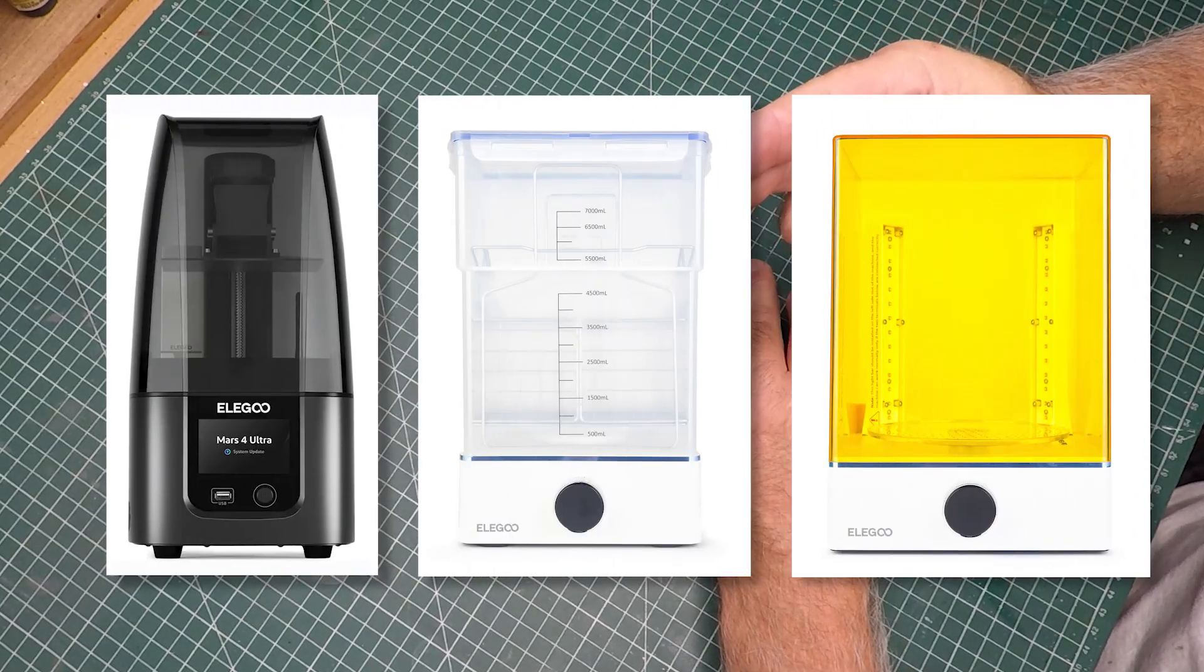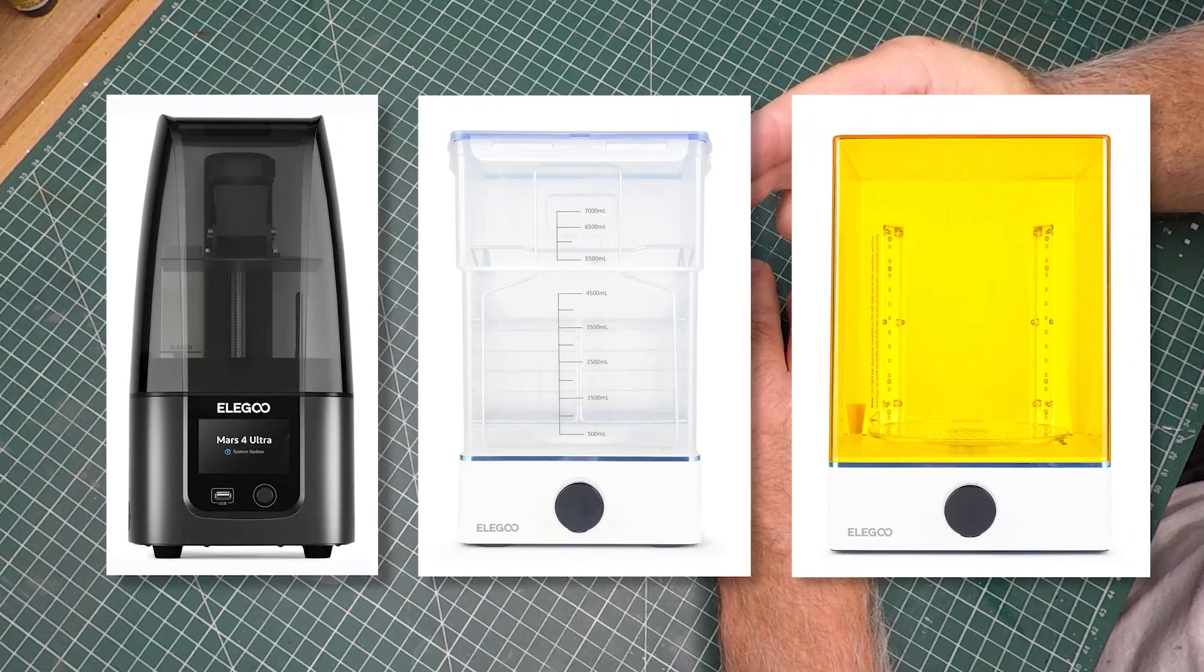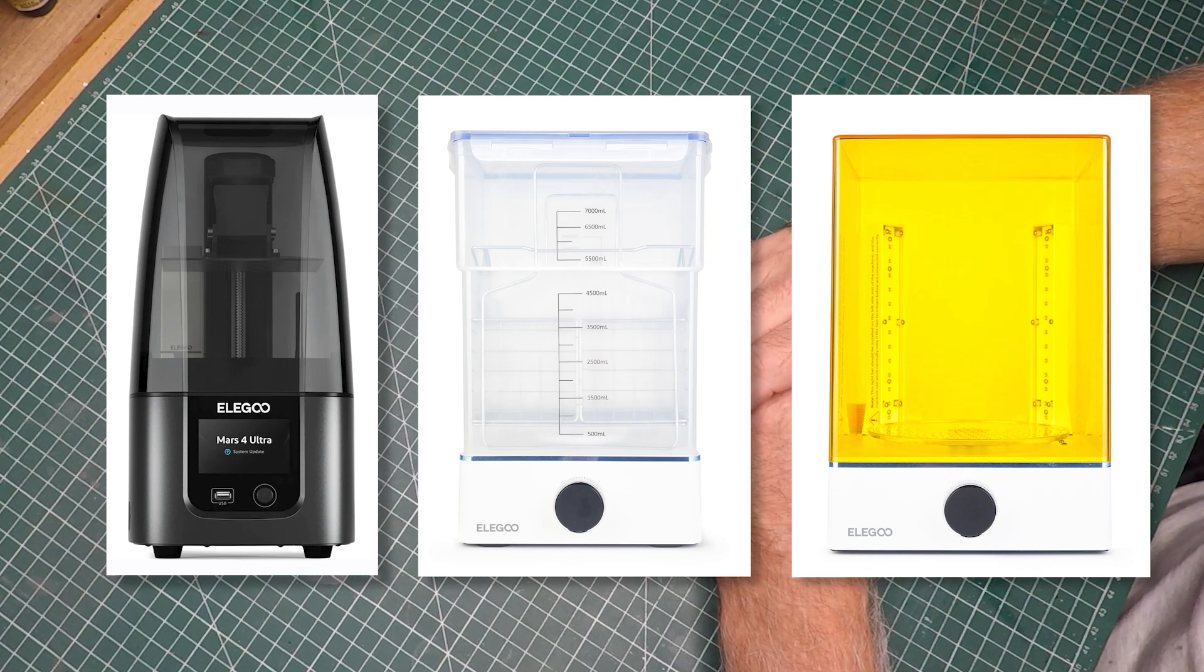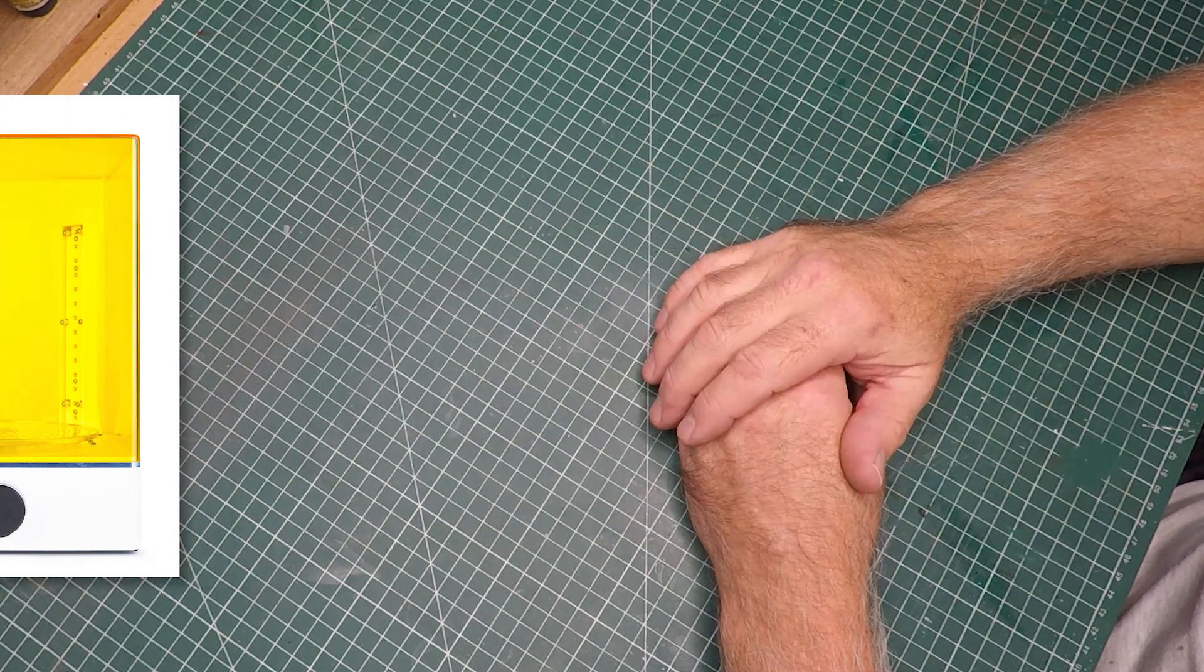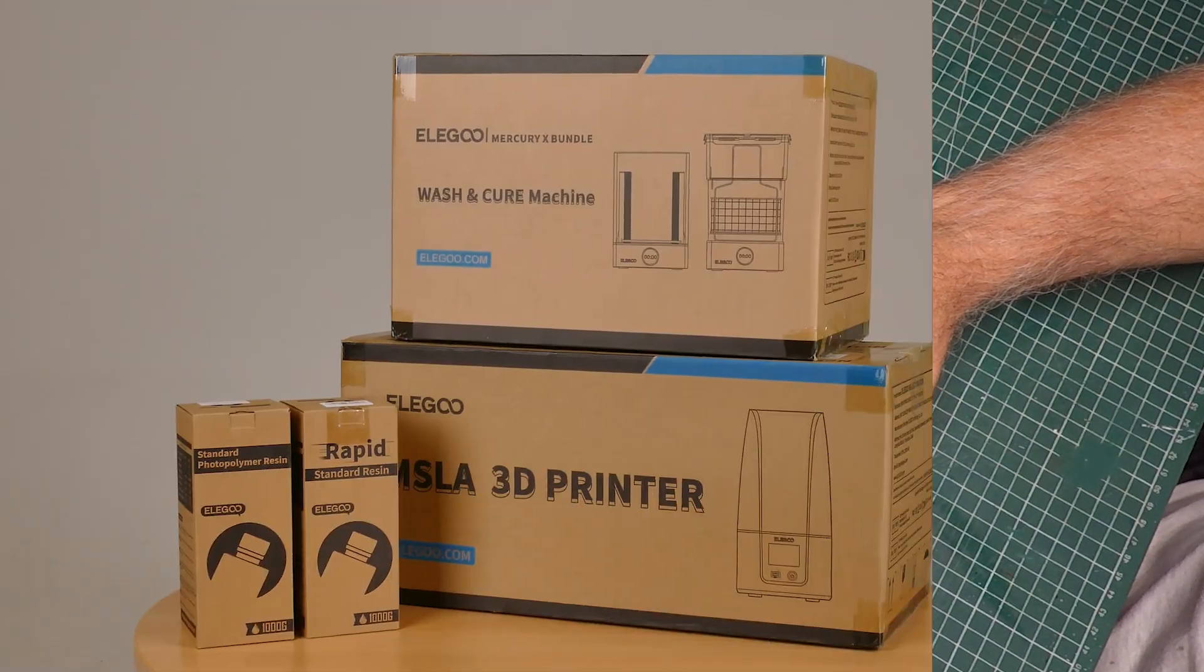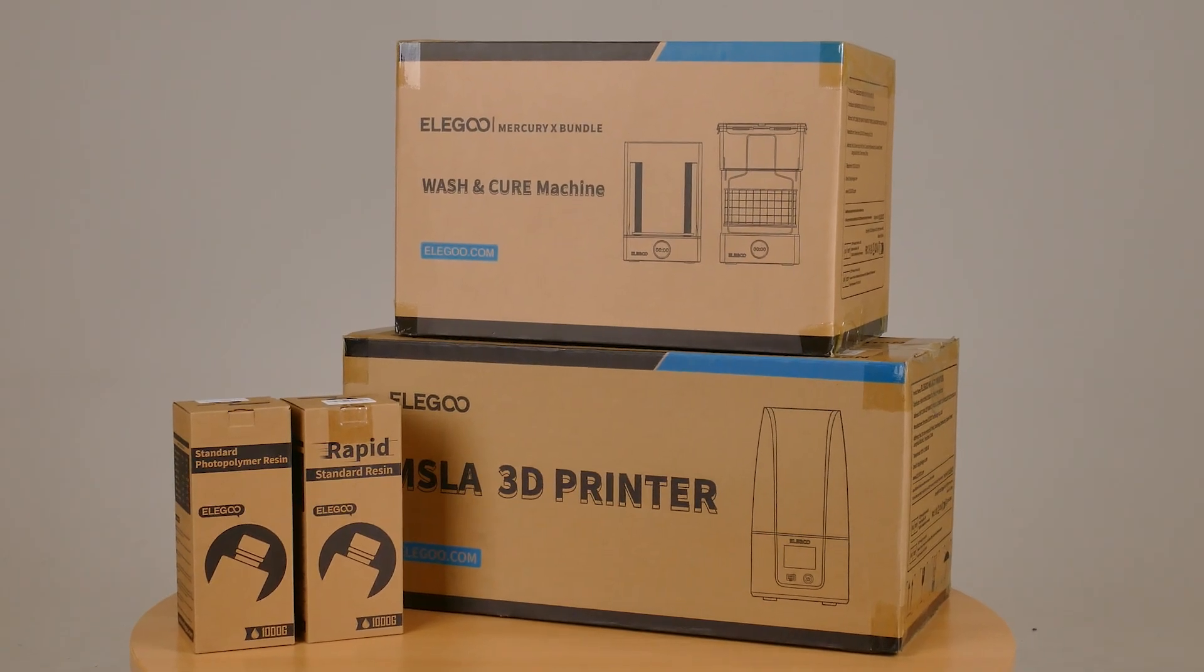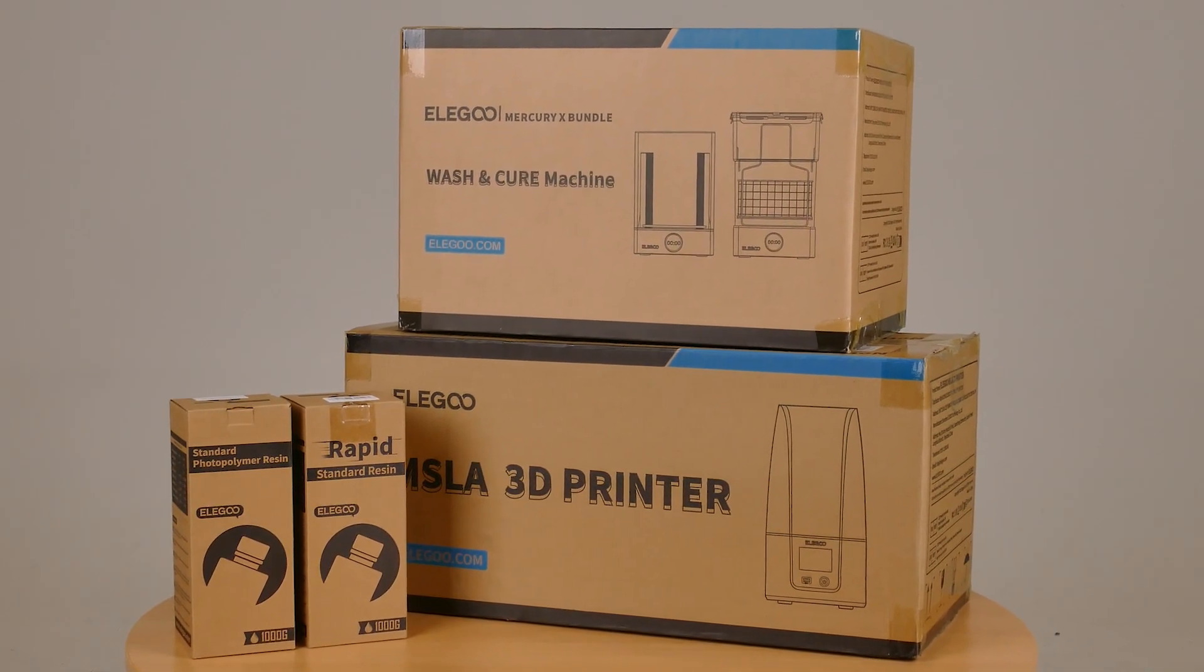It was an Elegoo Mars 4 Ultra 9K 3D printer as well as a washing machine and the curing station. It was great timing because I've been struggling getting rid of the printing lines from my current printers.